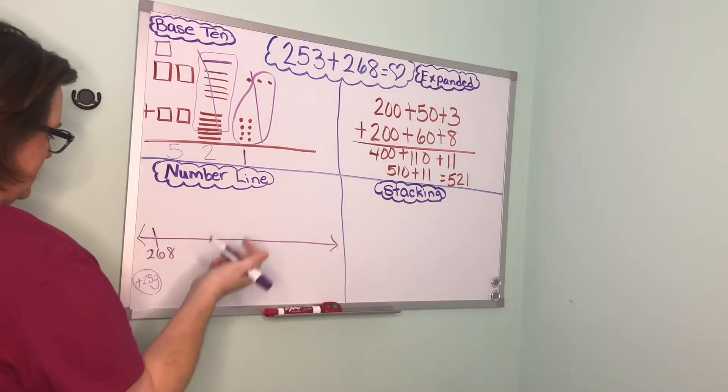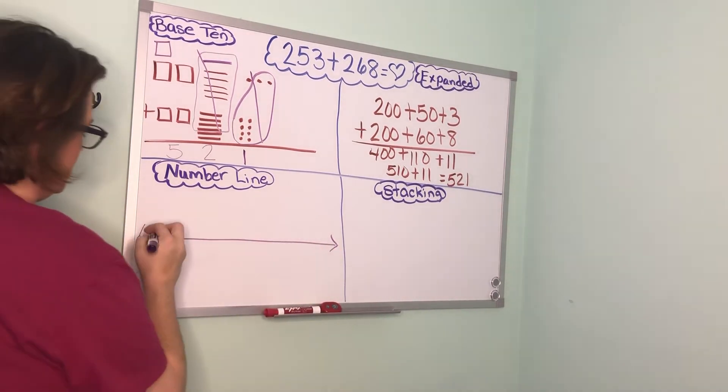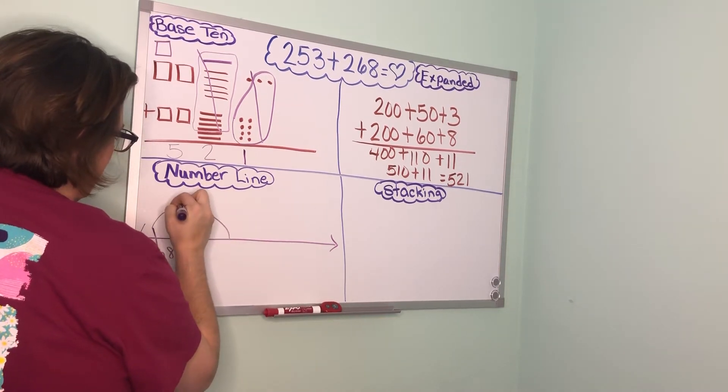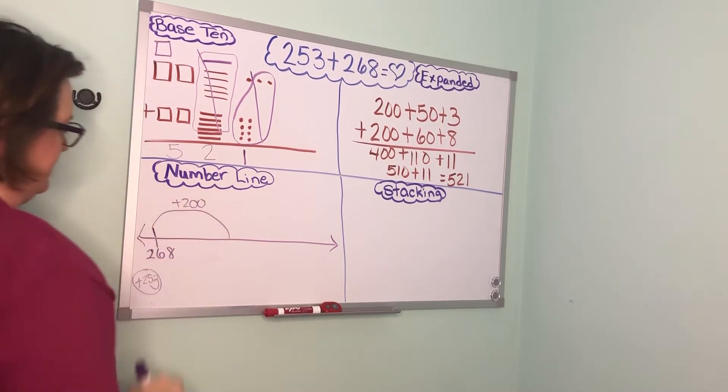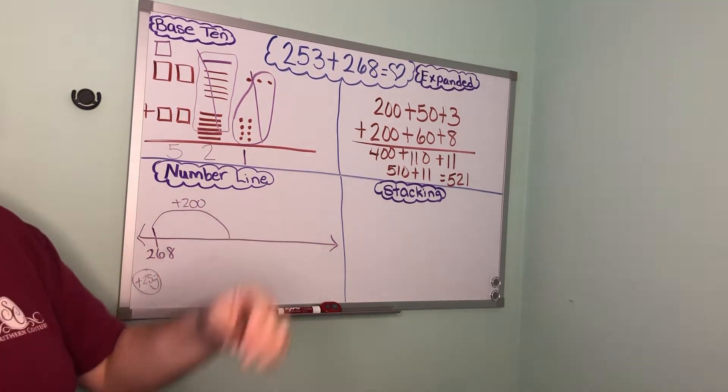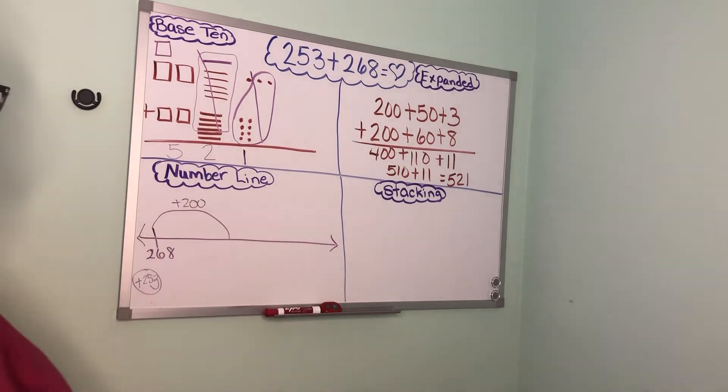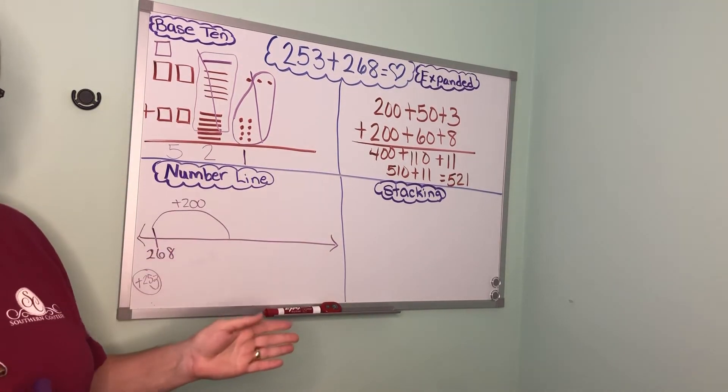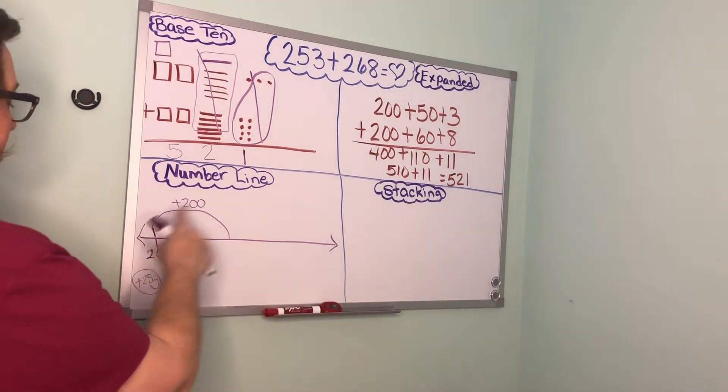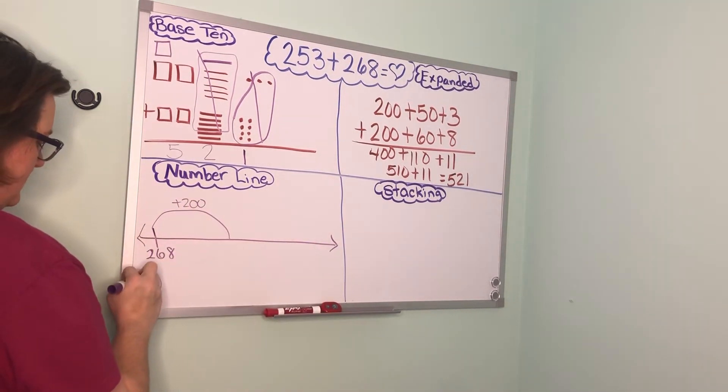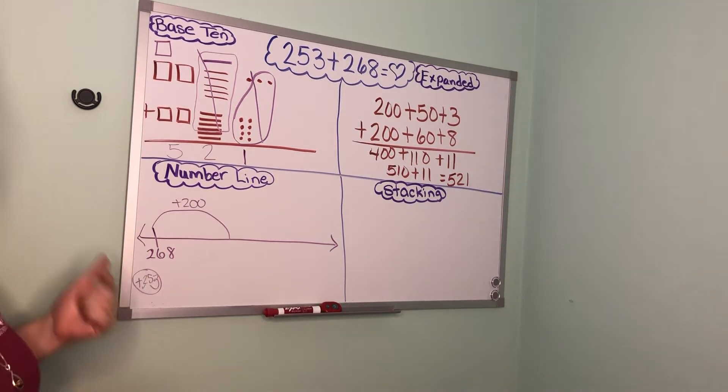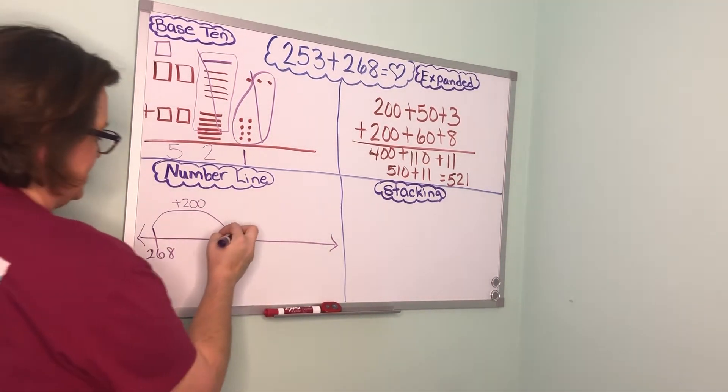Now I'm going to start at 268 and I'm going to go ahead and do a big hop and let that be plus 200. So you don't have to jump 100 and then 100 more. You can go ahead and jump 200. If you want to break it down and do 100 and then a second hop for a second 100 you can. But we just hopped the whole 200 so I'm going to put a little check right there under my two.